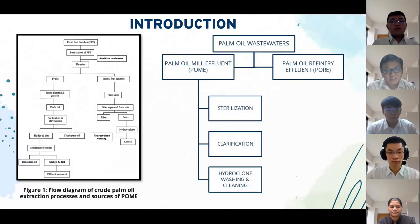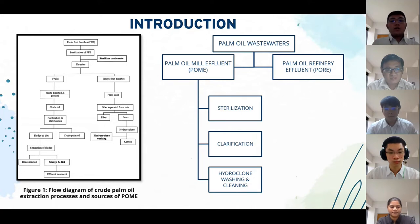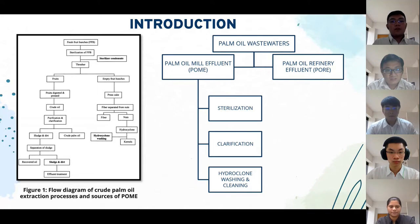This is the flow diagram of how crude palm oil is extracted from the fresh fruit bunches. It involves many processes from sterilization until the crude palm oil is extracted. It is undeniable that waste products will be produced throughout the process, and according to Hassan, an estimated 30 million tons of palm oil waste are produced annually from more than 300 oil mills in Malaysia. Palm oil waste can be divided into two categories: palm oil mill effluent and palm oil refinery effluent.